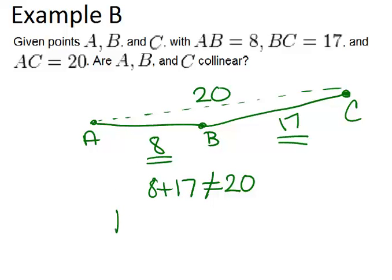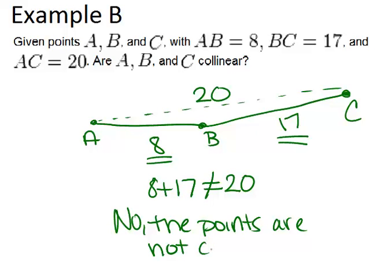So are they collinear? No, the points are not collinear. And what we were using right there in this problem is the segment addition postulate. The idea that to make a full line, two segments added together, their lengths added together, should be the length of the full line.